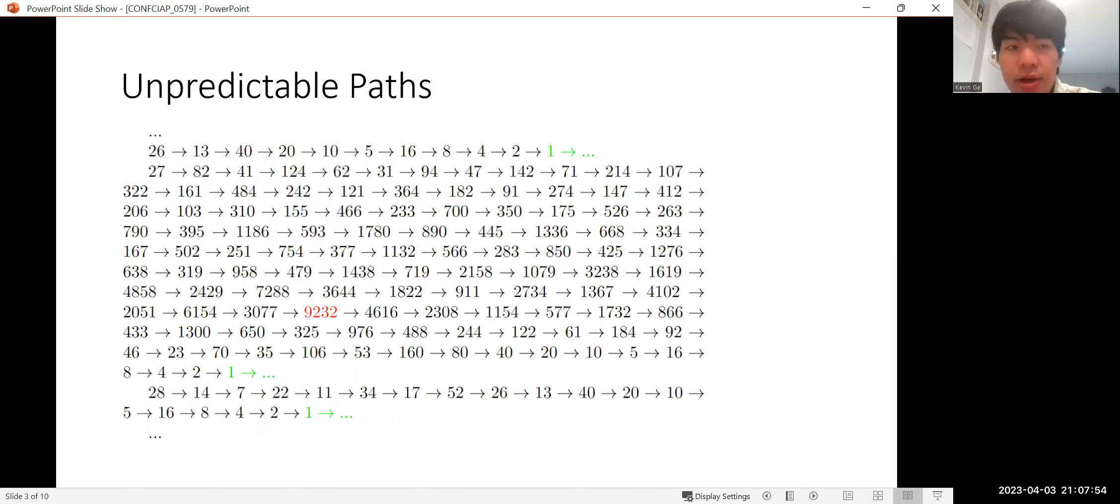So let's have a look at why the conjecture might be hard to prove. As you can see, the paths can get quite unpredictable. So for example, 26 and 28, they both converge to 1 pretty quickly, and they don't reach very high numbers. For 27, it goes all the way up to 9,232, and it takes significantly more iterates to reach 1. However, there are still some patterns in these iterates, and sieves are actually developed from these patterns.